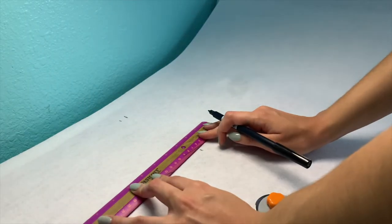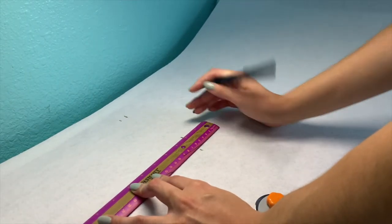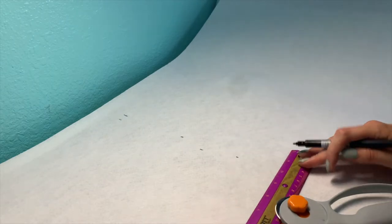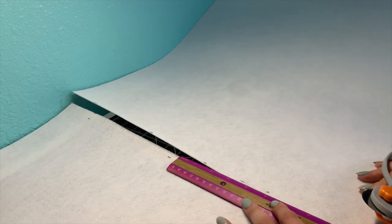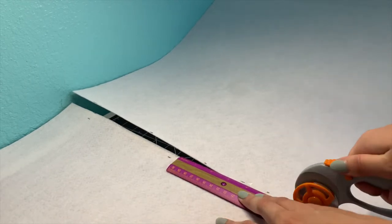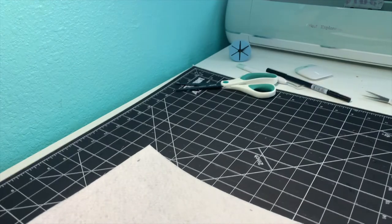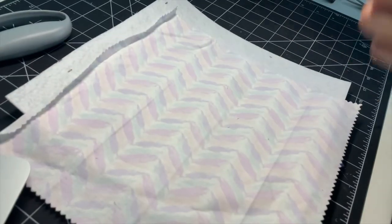Here I'm cutting my fusible interfacing fabric. Mine is one-sided which means it has glue on one side of the fabric and this helps to harden or stiffen your book pages. I cut out my fusible fabric about half an inch larger than it should be.